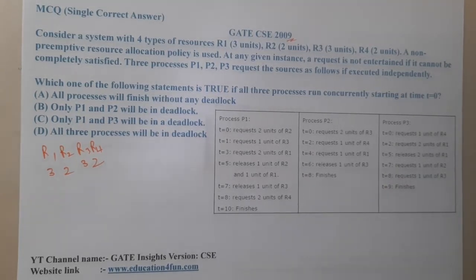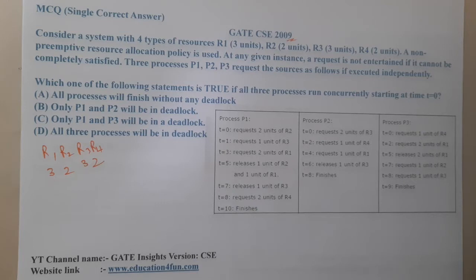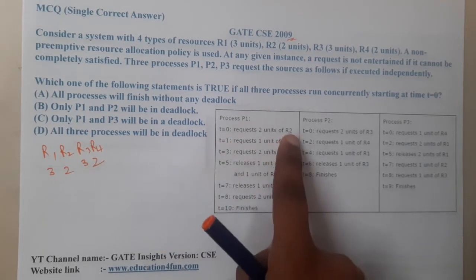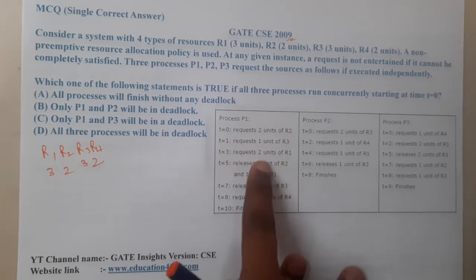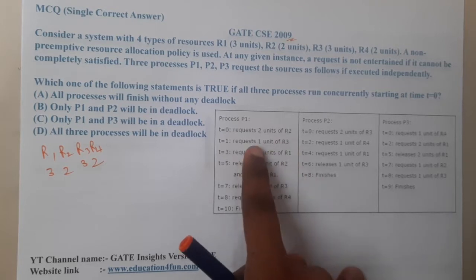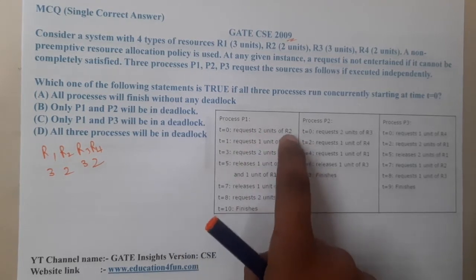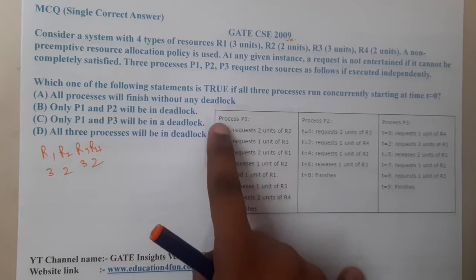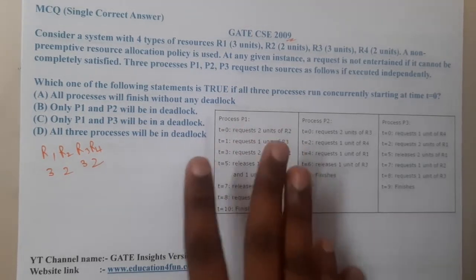A non-preemptive resource allocation policy is used. Non-preemptive means it is a non-stop type — at any given instance, a request is not entertained if it cannot be completely satisfied. For example, at time t0 if R2 has only one unit available when two are requested, it will be skipped for now.